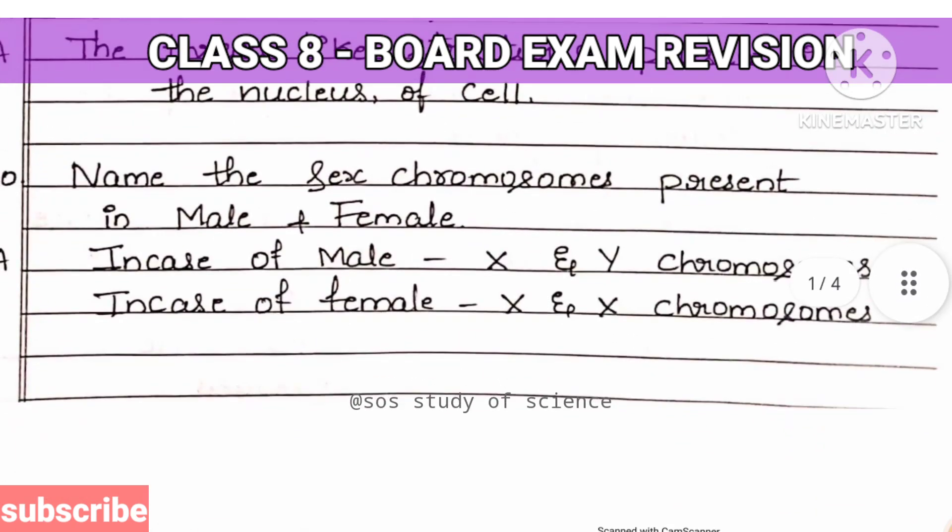Moving to the 20th question: name the sex chromosomes present in the male and female. In the case of males, X and Y chromosomes are present. But in the case of females, it is always X and X chromosomes. We always say males have a mismatched pair of chromosomes, that is X and Y, whereas females have a perfect pair of chromosomes, that is X and X.